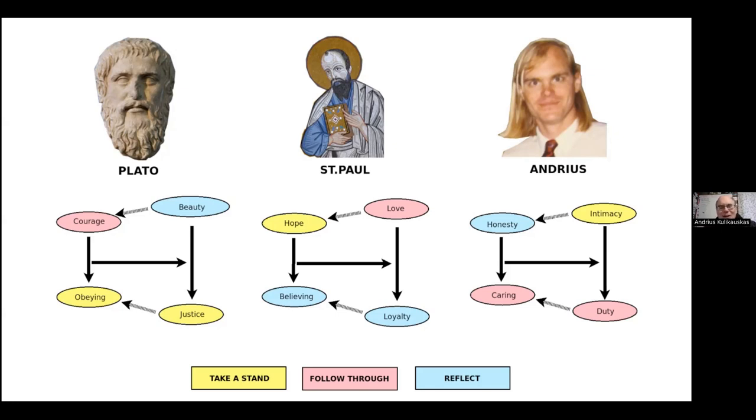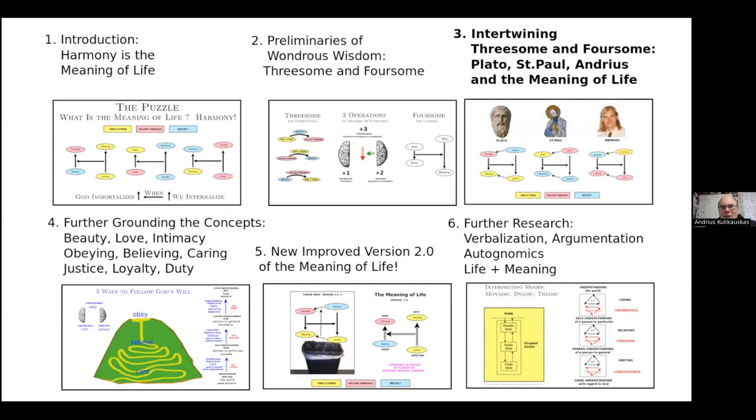If you've watched the first two episodes, you'll have a sense of that. If not, then hang on, maybe you'll get it. So we'll start with Plato. He has a value system where there is obeying, what he called temperance. There's courage. There's wisdom, which relates to beauty, and it all is in support of justice. This is the third part, about intertwining the threesome and the foursome.